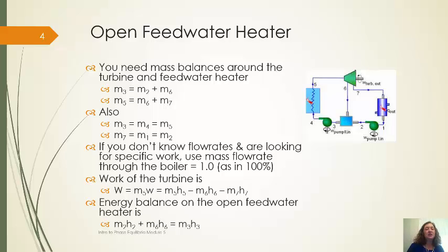Sometimes we don't know the flow rate, and we're going to be looking for just like the specific work. In that case, the recommended technique is to just say, let's call the flow rate through the boiler 1, not as in 1 kg per second or something like that, as in 100%. If I do that, then I can continue with doing the rest of the balances and treat it as if I've got a normal flow rate given.